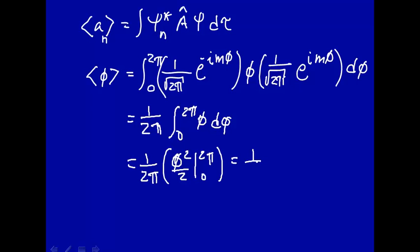The integral here is phi squared over two evaluated between zero and two pi. That's one over two pi. This will be two pi quantity squared divided by two, that's the upper limit. The lower limit is zero. So this comes out to be pi.